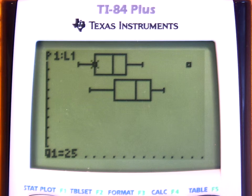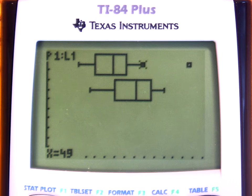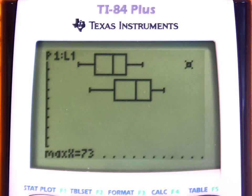If you press the right arrow, you've got the Q1 value of 25, median at 34, Q3 is 41. Notice the end of the whisker is at 49 because we have the outlier that we determined at 73.